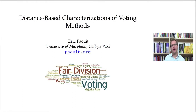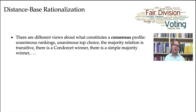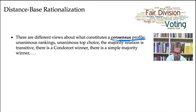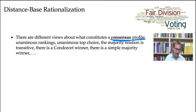Let's take a look at a different style of characterization results. The general idea is that we're going to start with a notion of consensus. There are different views about what actually constitutes a consensus profile. For example, you might say that there's consensus in a profile if everybody agrees on the rankings — unanimous rankings — everybody agrees exactly what the rankings are.